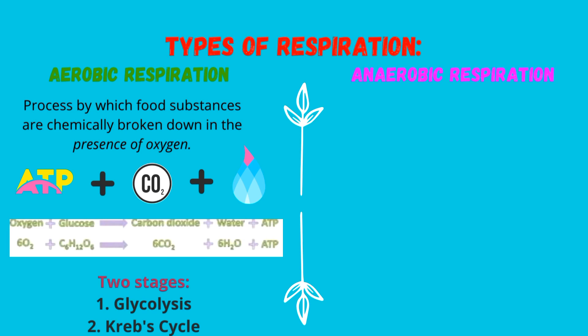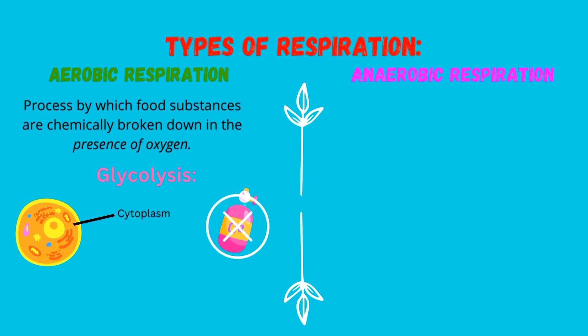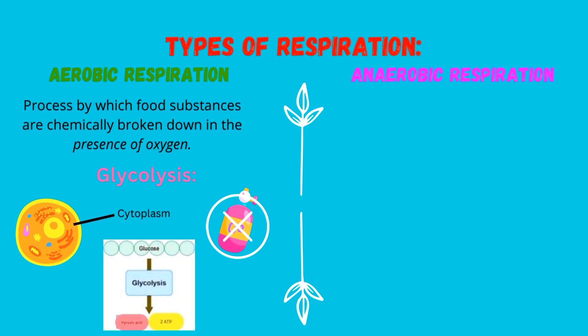Any discussion of aerobic respiration has to include these two stages. Glycolysis is the first stage of aerobic respiration. It occurs in the cytoplasm of the cell and does not require oxygen. In glycolysis, glucose molecules are broken down to form pyruvic acid and two molecules of ATP.